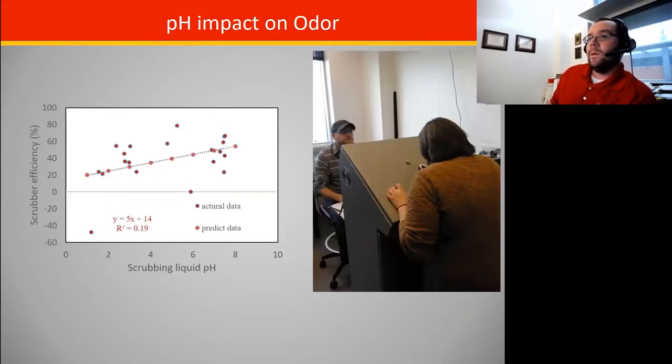We did play around with olfactometer measurements as well. What we did see is that actually as we got more acidic in our lab scale systems, we actually had lower odor removal efficiency. So while we did better for ammonia, some of those other odorants, potentially the sulfur compounds, we just didn't do as well on.